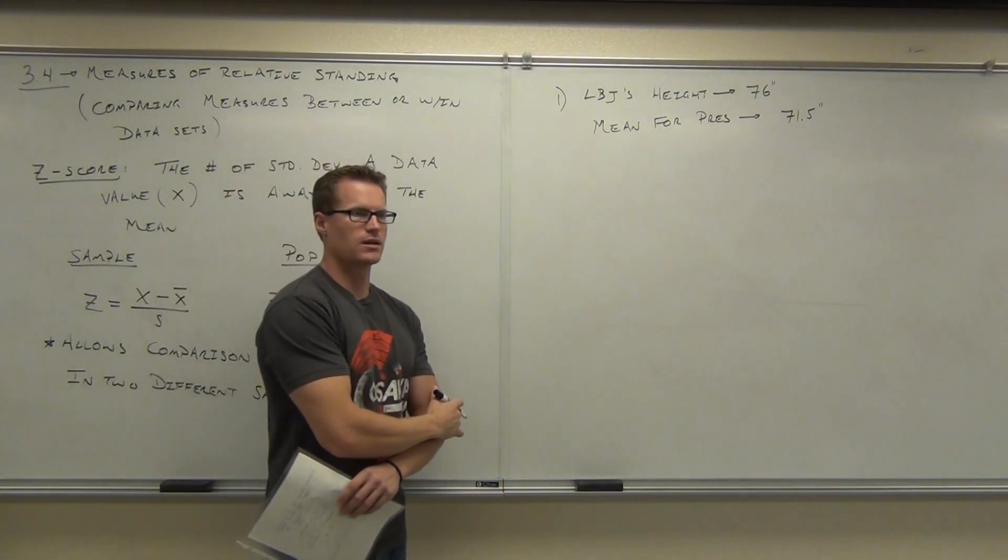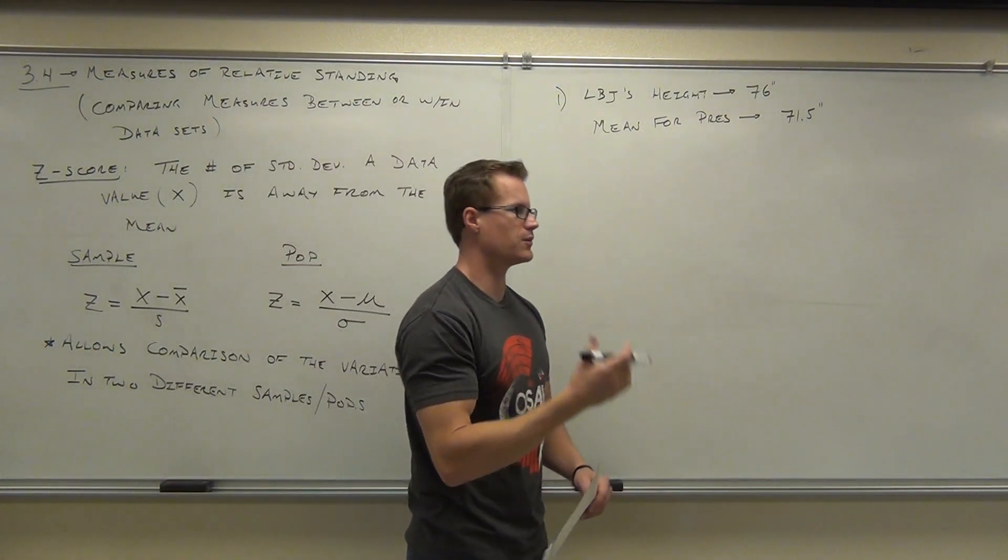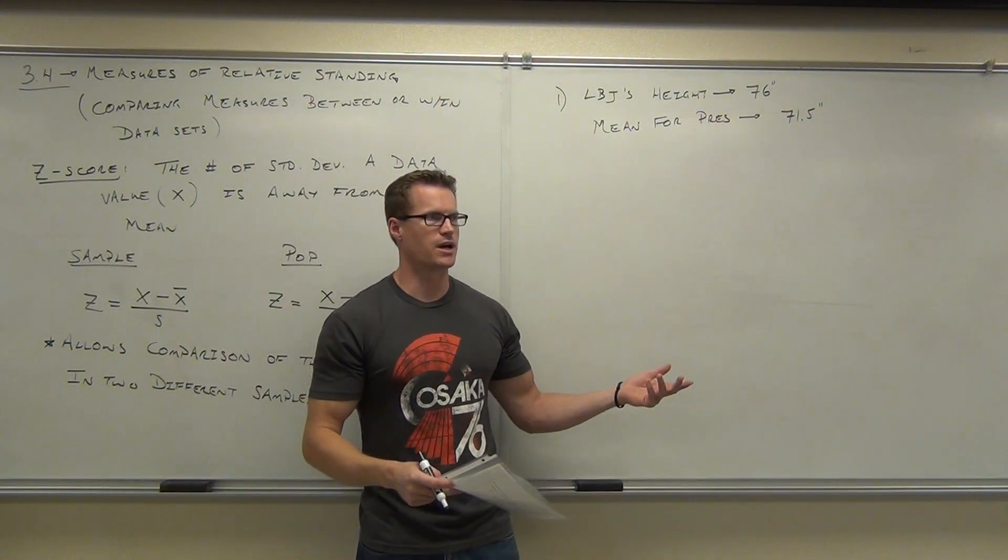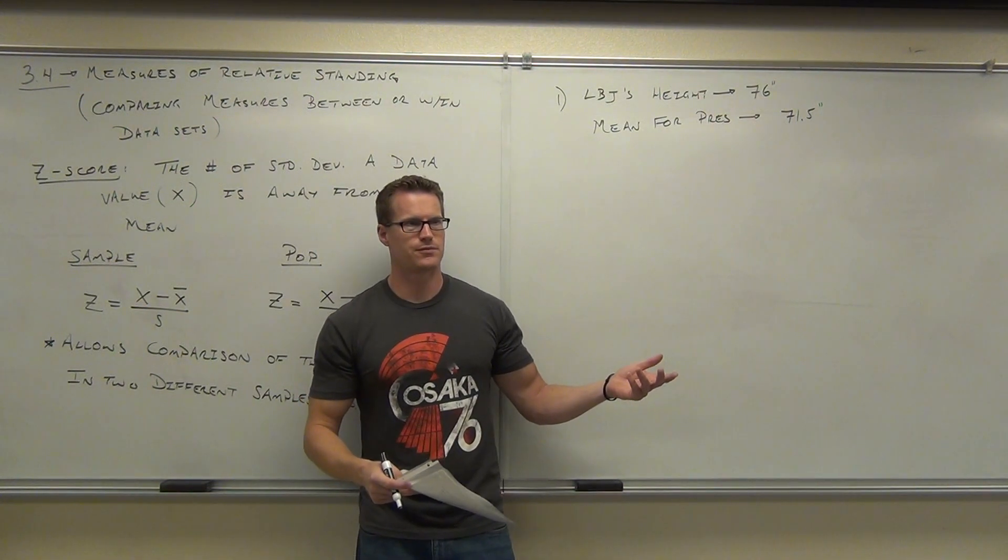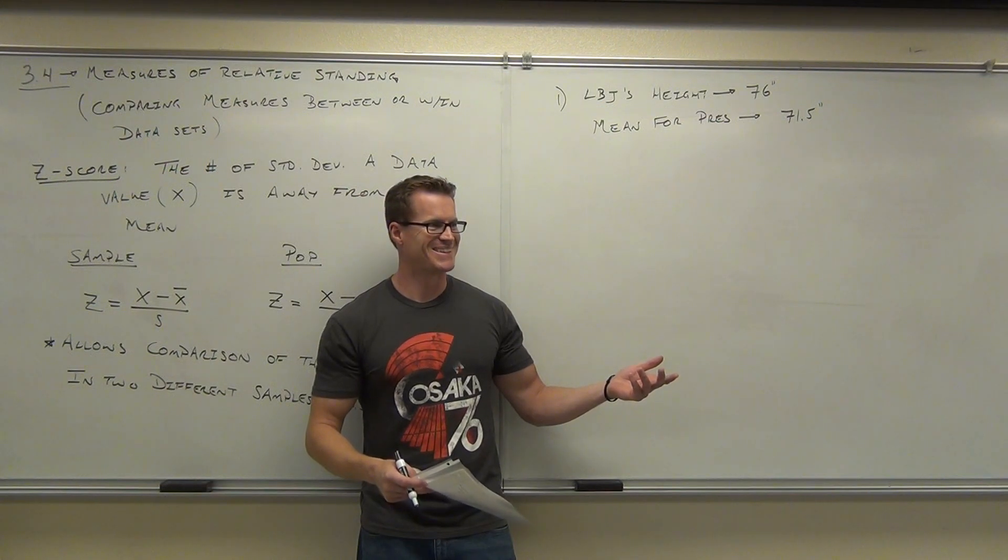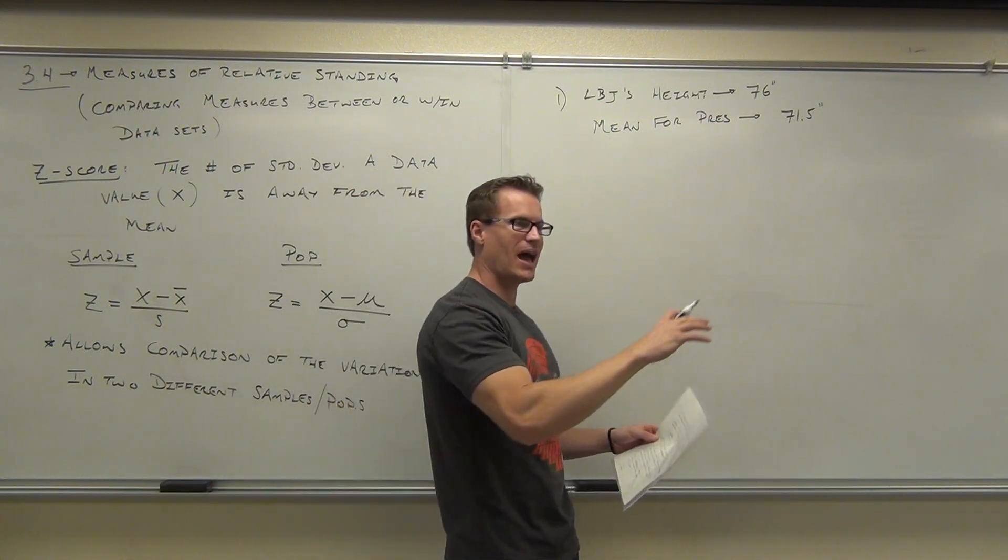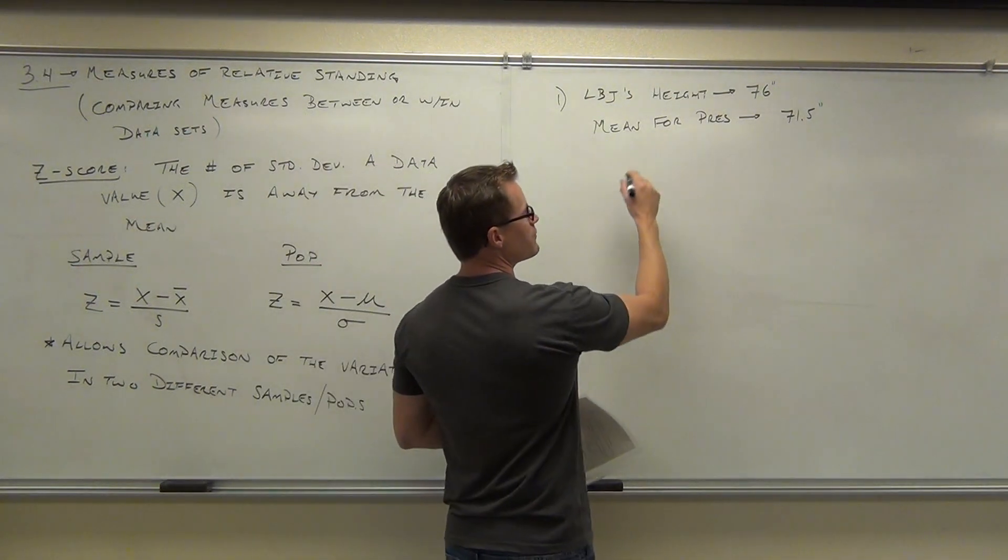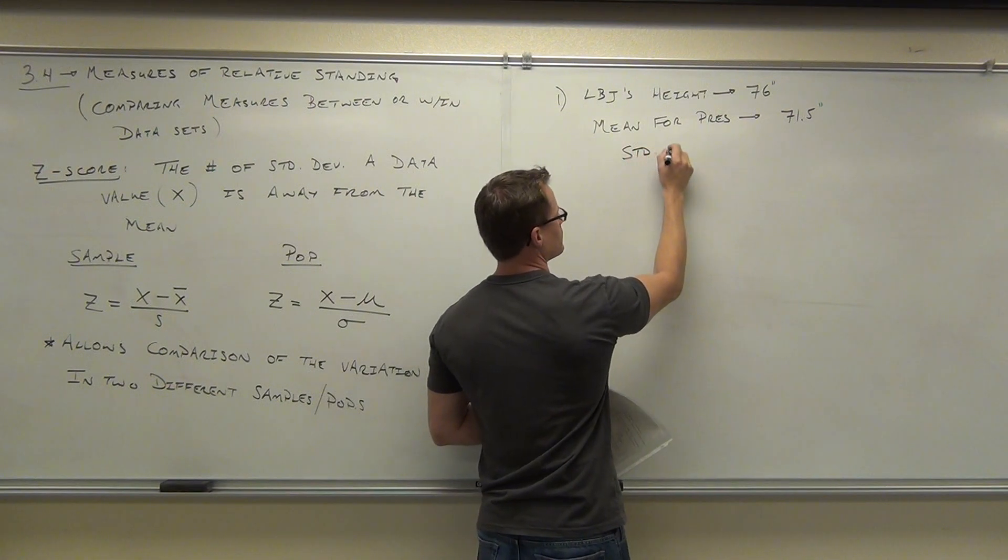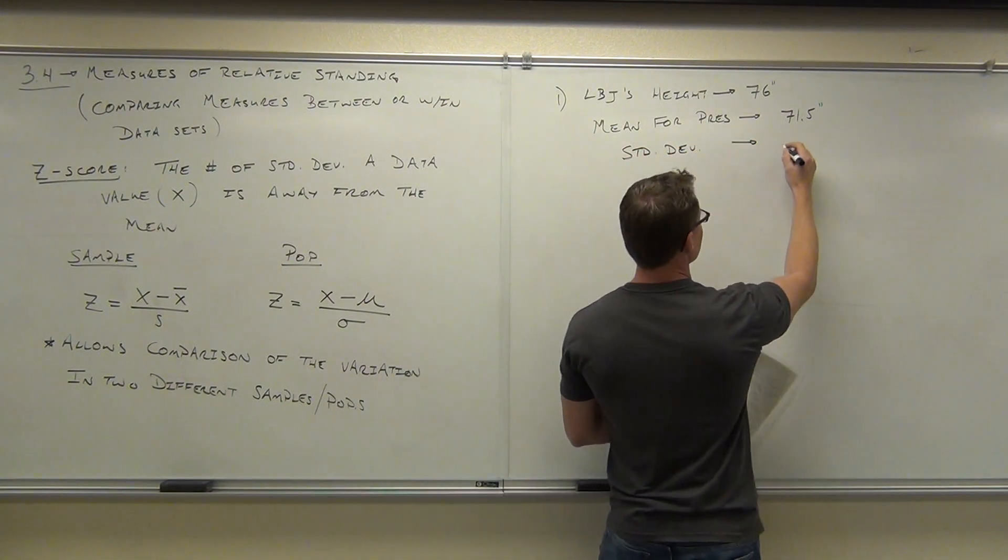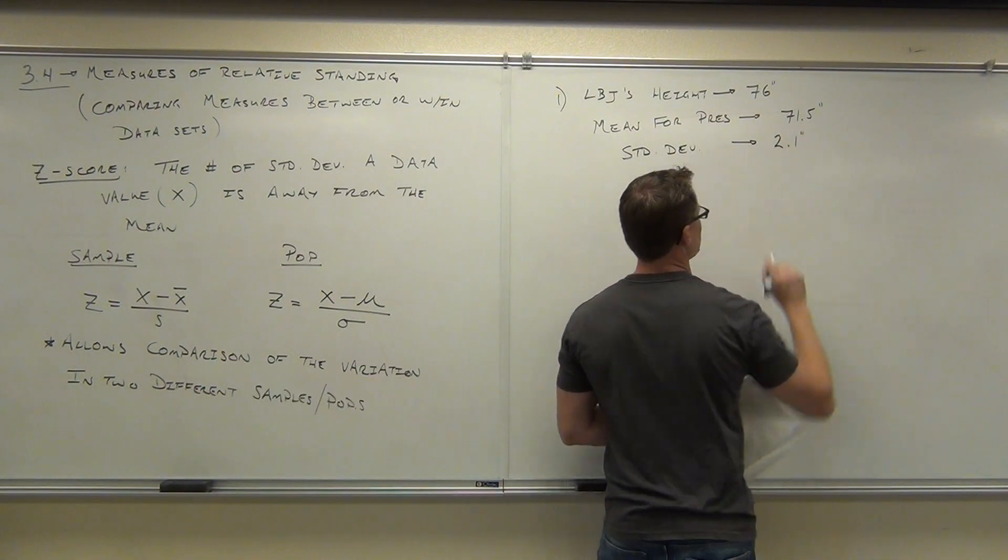So on average, they're a little under 6 feet tall. They're like 5'11 and a half on average. Some are shorter, some are taller. The shortest guy was 5'4". I think it was Madison. I'm pretty sure. So average all together, they have almost 6 feet. And the standard deviation for these presidents, 2.1.